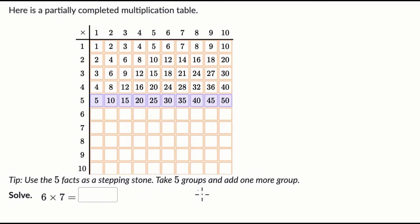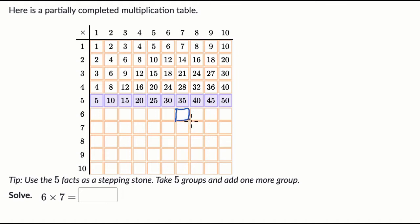Take five groups and add one more group. So pause this video and have a go at this before we do this together. All right, so we're trying to figure out what six times seven is — it would be right over here on our multiplication table. They give us a nice hint: use the five facts as a stepping stone. Take five groups and add one more group.